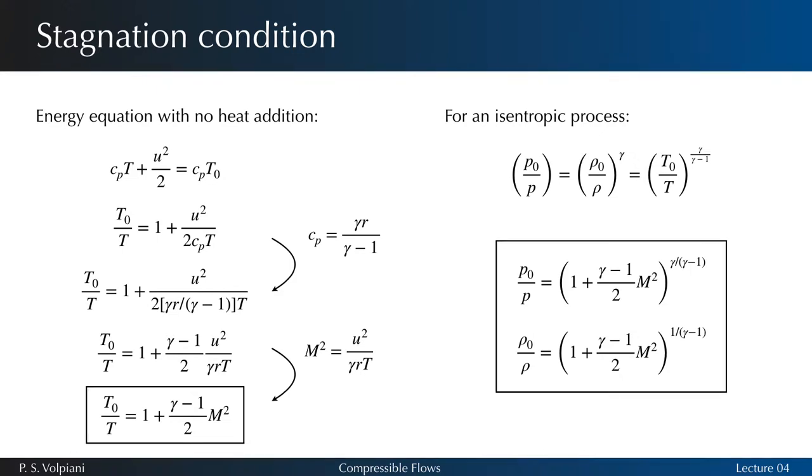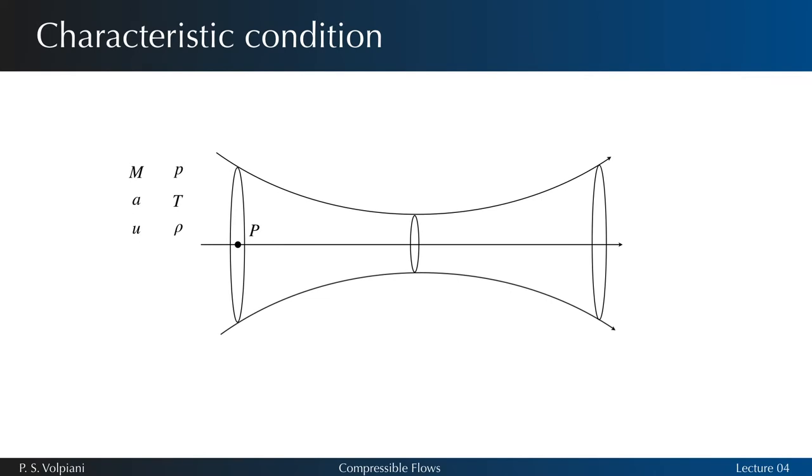The same way we can define a reference state where the velocity is zero, we can define a state where the velocity is such that the Mach number equals 1. Consider an arbitrary flow field in which a fluid element is traveling at some Mach number M and velocity u at a given point P.